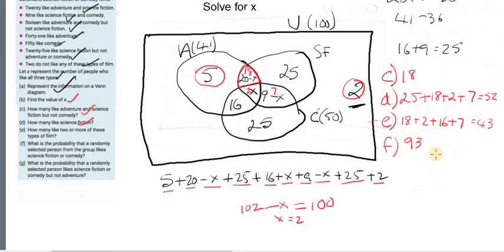So there's 93 people like science fiction or comedy. And they ask you for the probability. What you do is you divide it by the total number of people, which is 93 over 100. That's the answer to the probability. 93% probability.